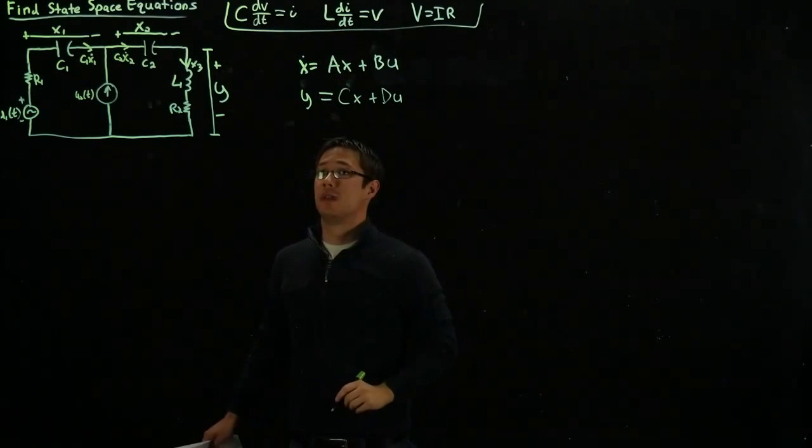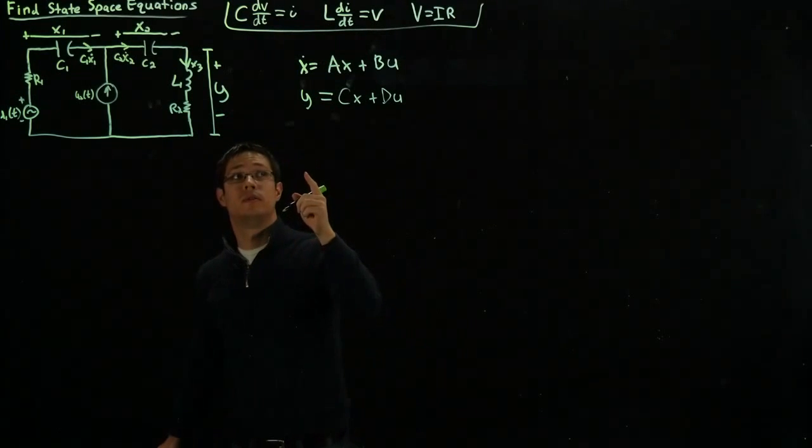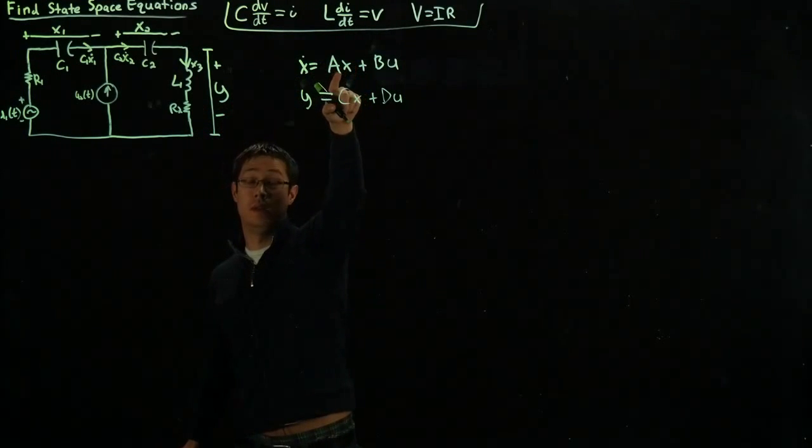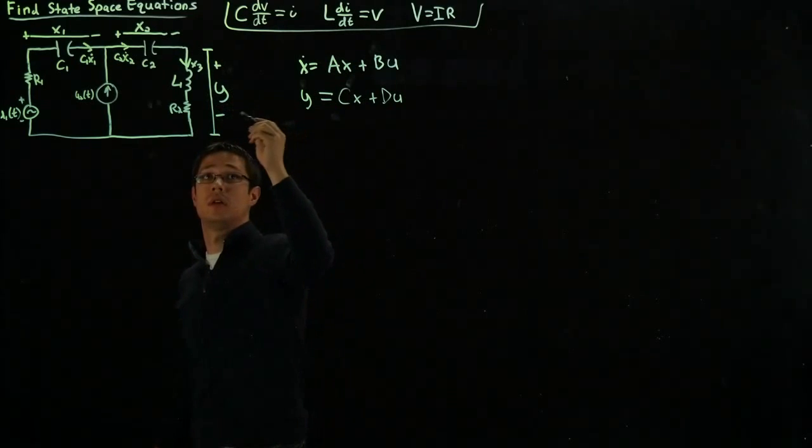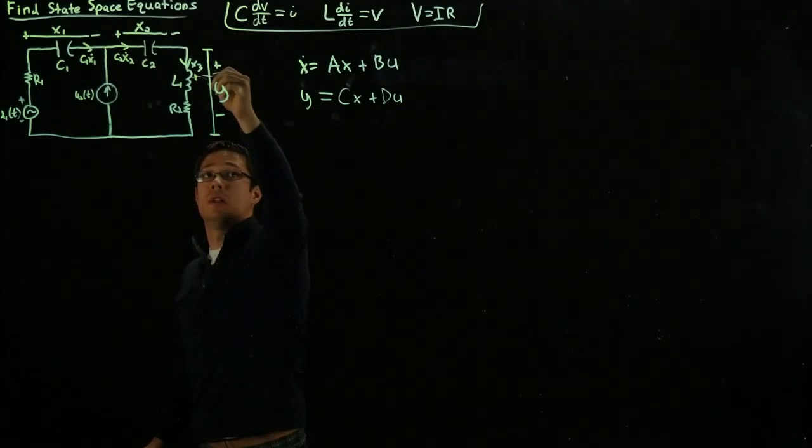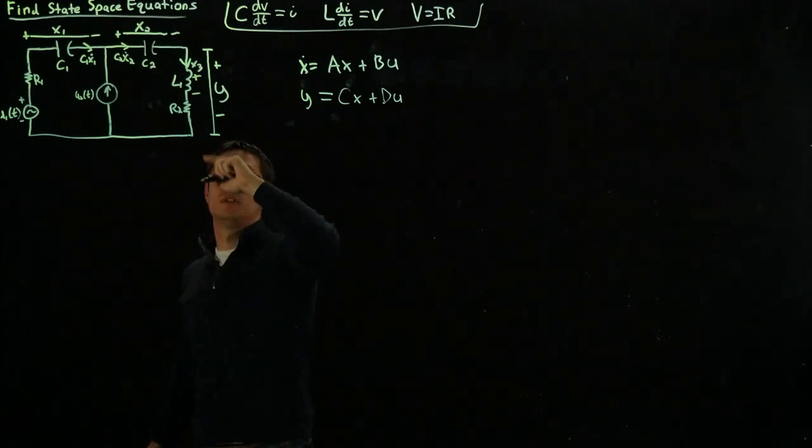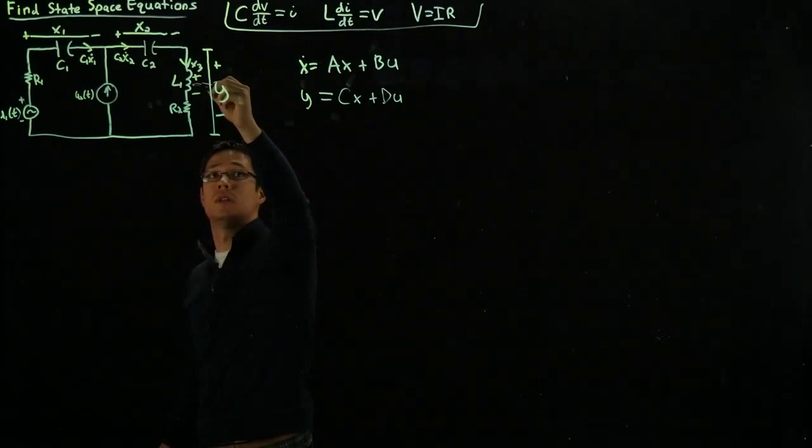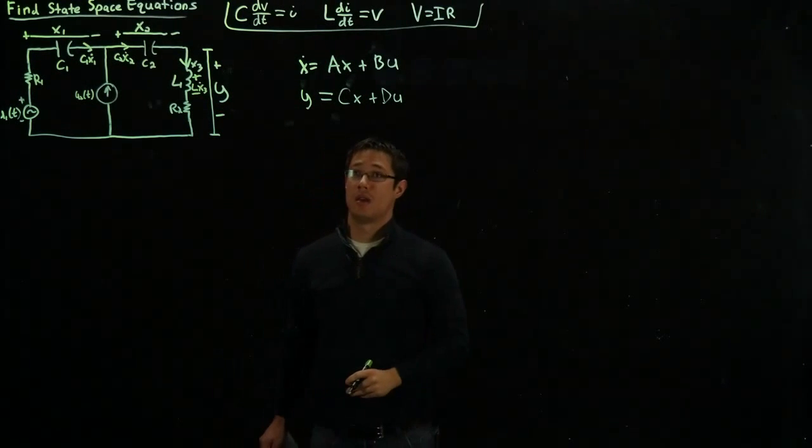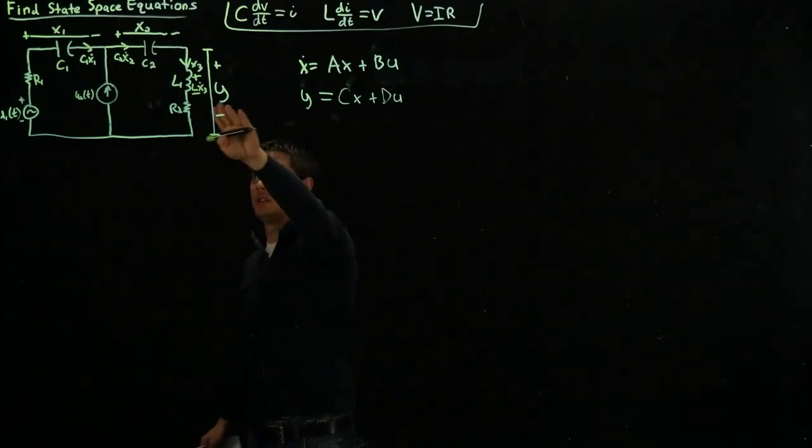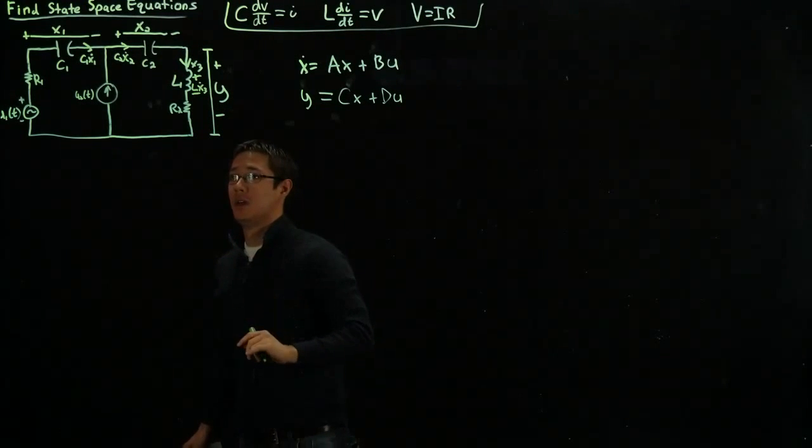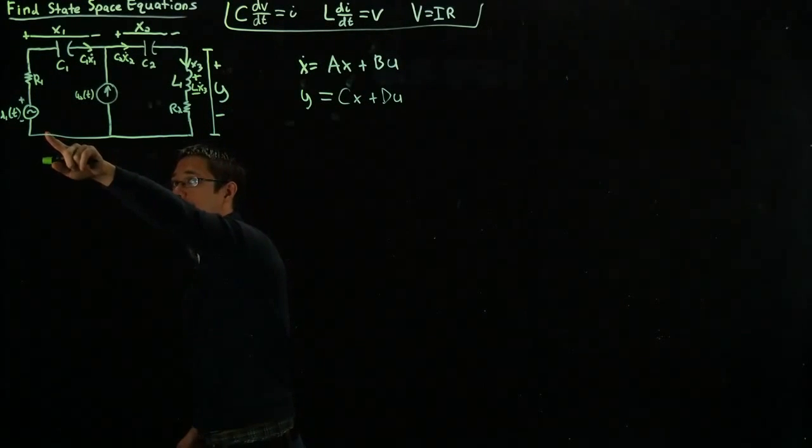Finally, for the inductor, the derivative of the current going through the inductor is the voltage. So our x3 dot is actually the voltage across the inductor, which is L x3 dot. Very good. So we've defined the states and the derivative of the states.